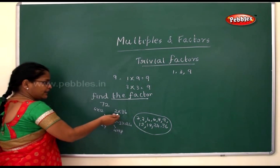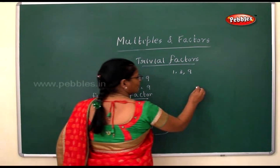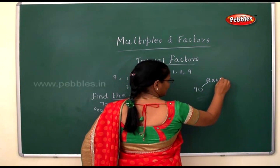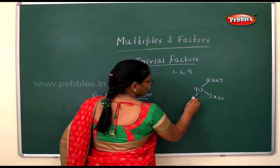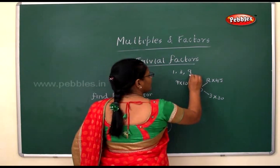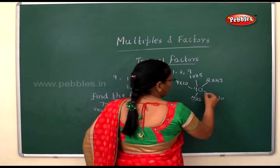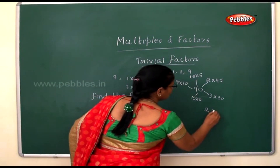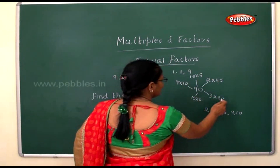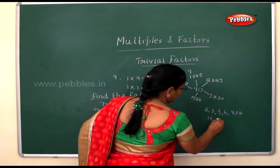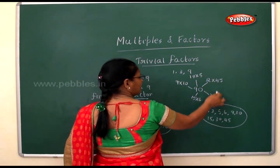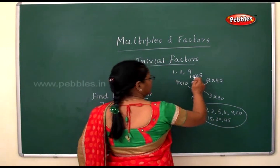Write all the multiples for seventy-two and then identify the factor numbers. The next number is ninety. For ninety: two forty-fives are ninety, three thirties are ninety, six fifteens are ninety, nine tens are ninety, eighteen fives are ninety. So the factors for ninety are one, two, three, five, six, nine, ten, fifteen, eighteen, thirty, and forty-five.